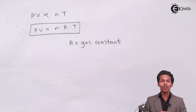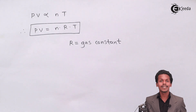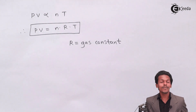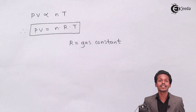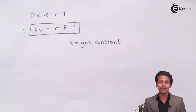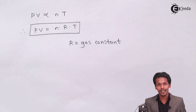This Ideal Gas Equation is applicable for all gases, and many more theories can be derived from it. So we have successfully derived the Ideal Gas Equation. I hope you understood how it was derived — this will be very useful in numericals as well. Please share this video with your friends and don't forget to subscribe to the eGita channel. Thank you so much.